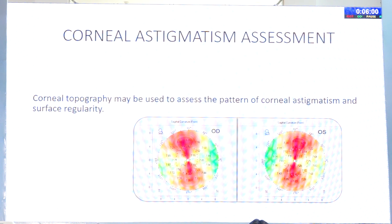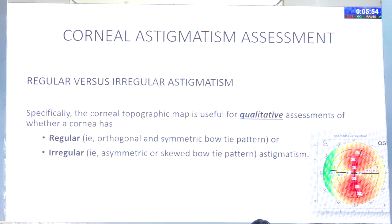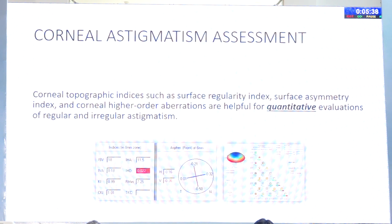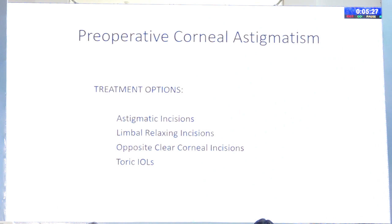The main thing is assessment of corneal astigmatism. Topography may be used to assess the pattern of corneal astigmatism and surface regularity — useful for qualitative assessment to know whether it is regular (orthogonal, symmetric bow-tie pattern) or irregular (asymmetric or skewed bow-tie pattern). This decides whether you are going to implant a toric or not. Quantitative assessment depends on the surface regularity index, surface asymmetry index, and corneal higher-order aberrations derived from topography.